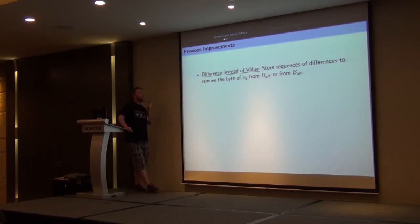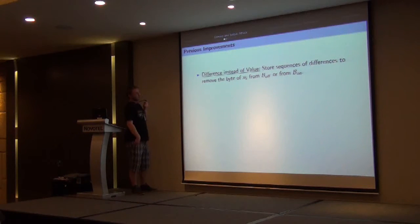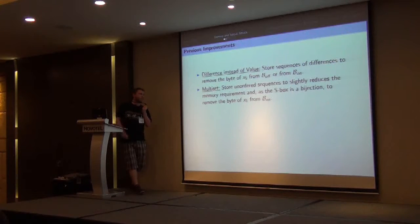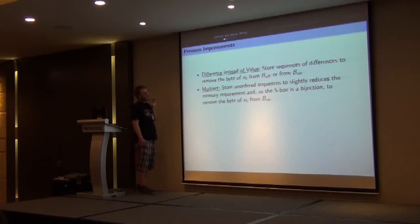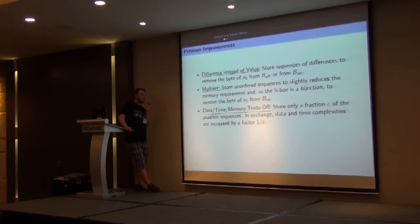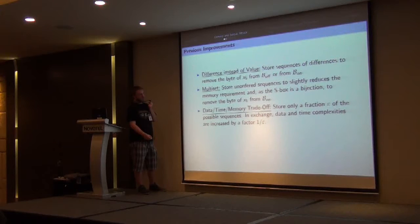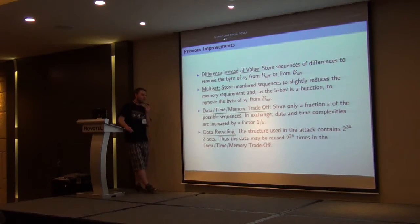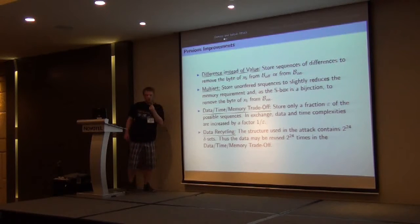The basic attack of Demirci and Selçuk has been improved. The first improvement is to consider a sequence of differences instead of a sequence of values, which allows removing one byte from B-on or B-off. It is also possible to store unordered sequences instead of ordered ones, which allows removing one byte from B-on that was used only to sort the delta-set. Finally, we can apply a classical data-time-memory tradeoff by storing in the hash table only a fraction of the possible sequences. In exchange, we run the attack many times to compensate for the probability of failure, increasing both data and time complexity. However, it is possible to save some data in this tradeoff by noticing that the structure used in this attack contains exactly 2 to the 24th delta-sets.